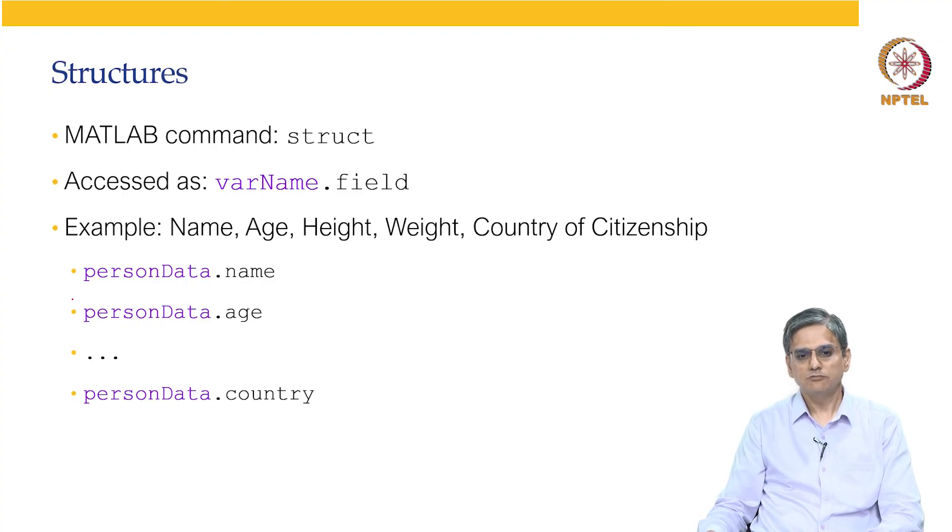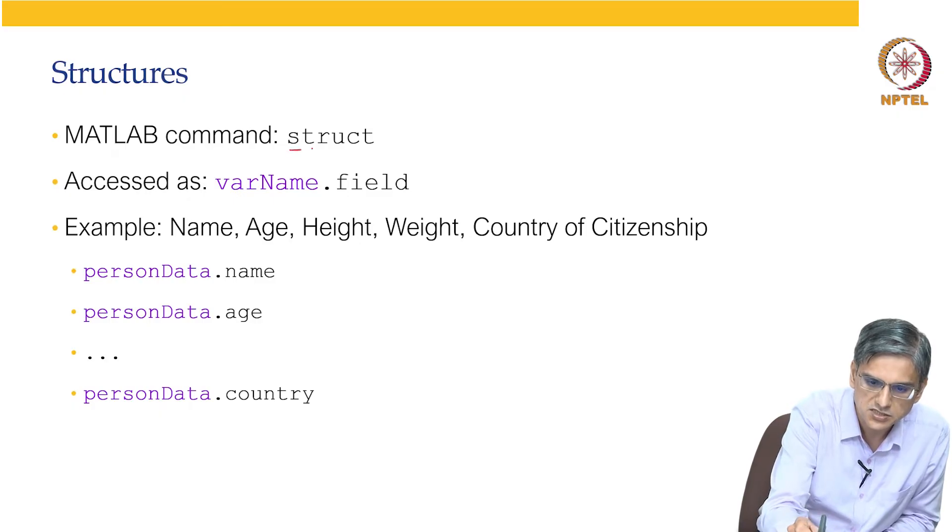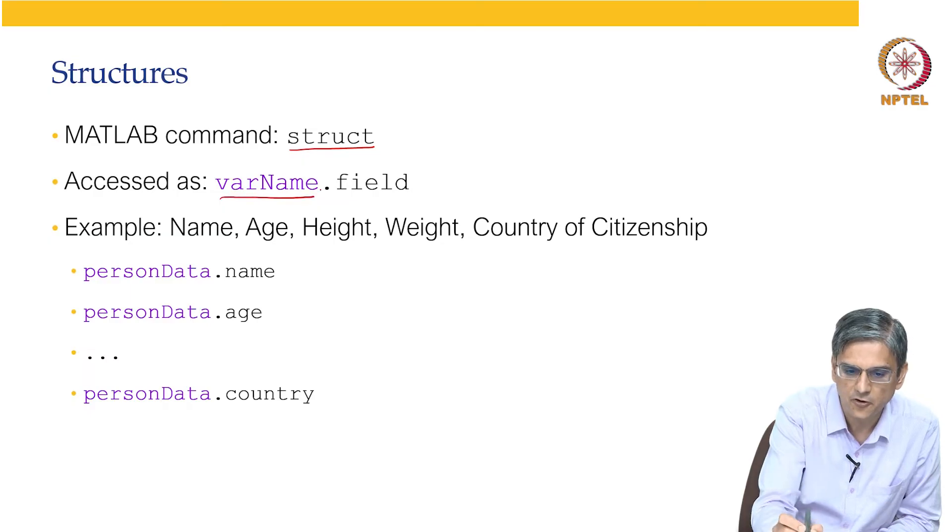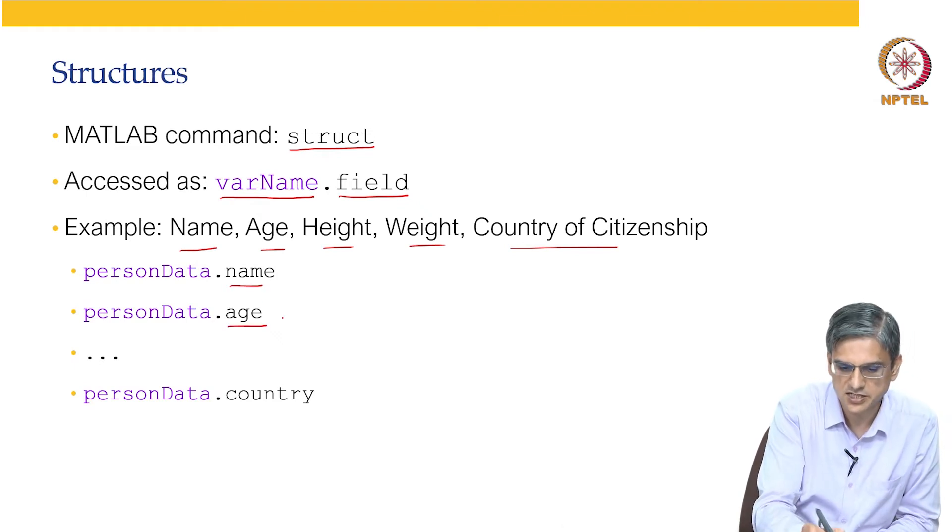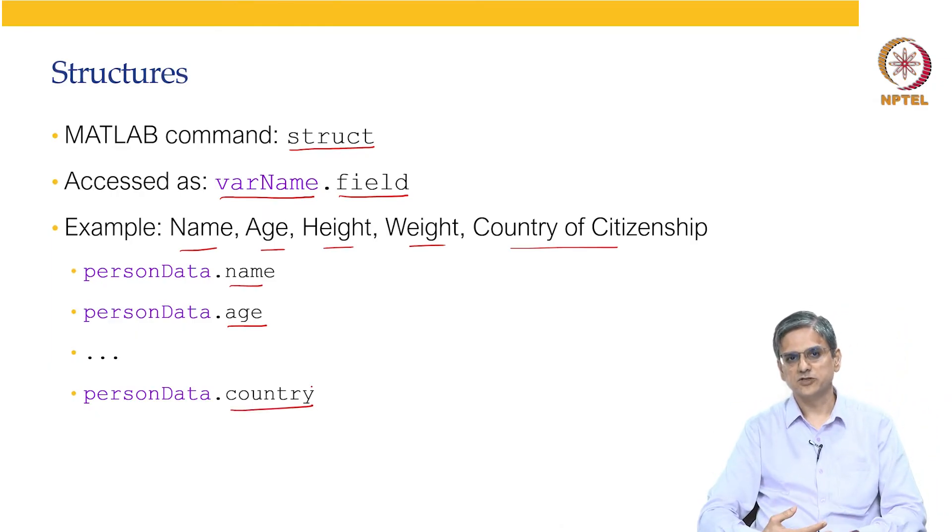Next, we will come to MATLAB structures. To create the structure, the command is struct, and the variables are of the form variable name dot field. An example: name, age, height, weight, country. The where dot name is the name of the person, where dot age is age of the person, and so on up to where dot country is the country of that person. Again, name is text, age is a number, height is a number, weight is a number, country is a number.